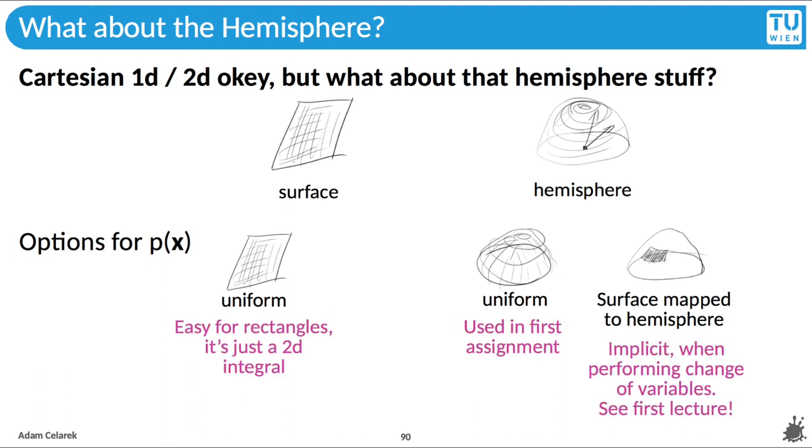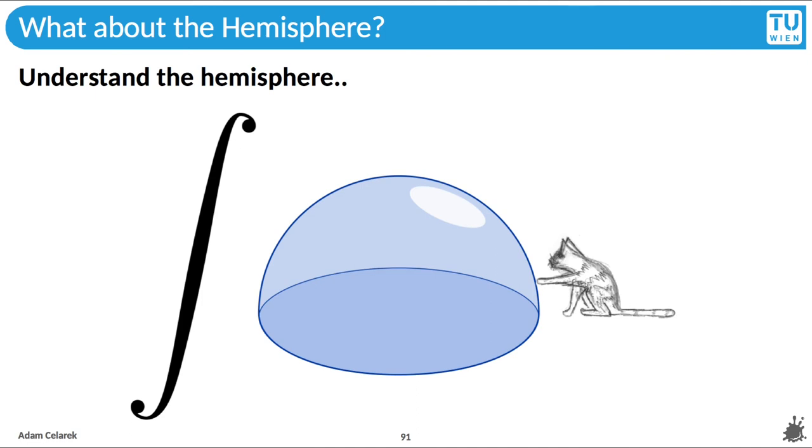Uniform sampling of a rectangle is pretty easy. We did it in an example before already. We will try to understand sampling of the hemisphere next, and surface mapping kind that happens implicitly when performing a change of variables, like you saw in the lecture about light. Okay, finally, let's try to understand that hemisphere.